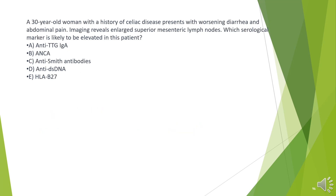A 30-year-old woman with a history of celiac disease presents with worsening diarrhea and abdominal pain. Imaging reveals enlarged superior mesenteric lymph nodes. Which serological marker is likely to be elevated in this patient?